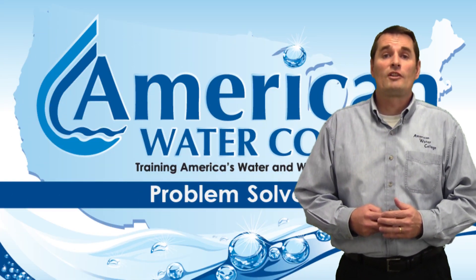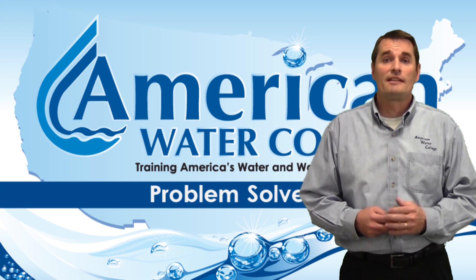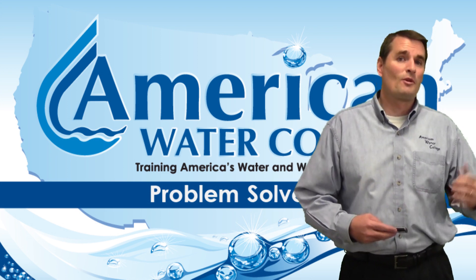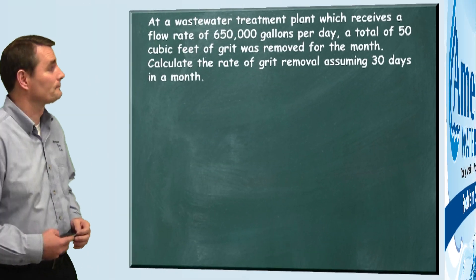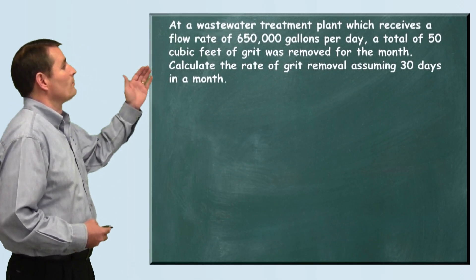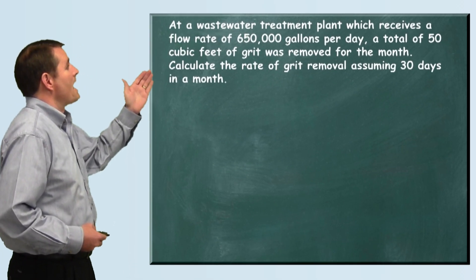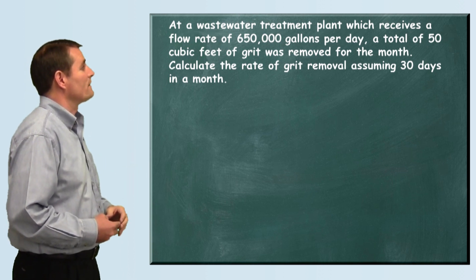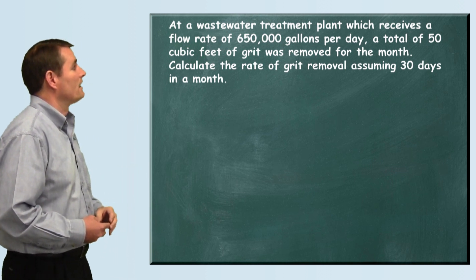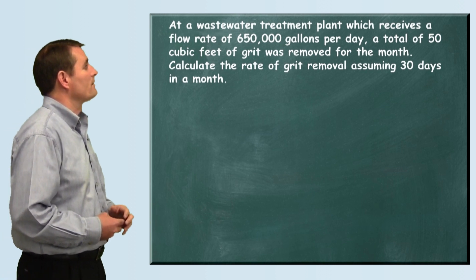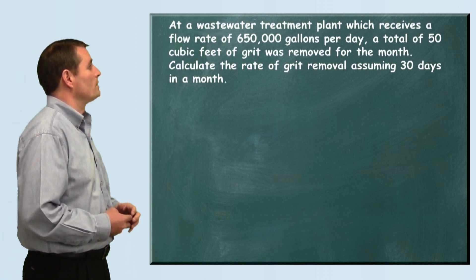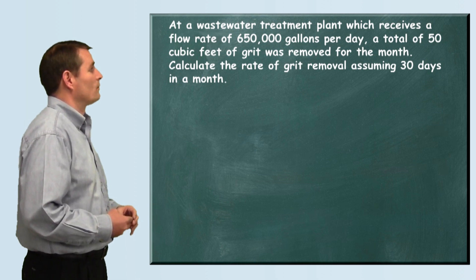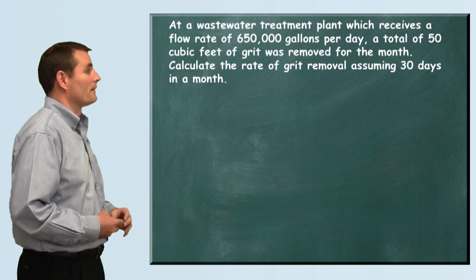In this problem we're going to learn how to calculate the grit removal rate from a wastewater treatment plant. The problem reads: at a wastewater treatment plant which receives a flow rate of 650,000 gallons per day, a total of 50 cubic feet of grit was removed for the month. Calculate the rate of grit removal assuming 30 days in a month.